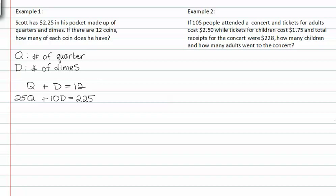Now we have a system of equations. If we multiply the first equation by negative ten, we can rewrite the system. If we multiply the second equation by negative ten, we can rewrite the system like this.